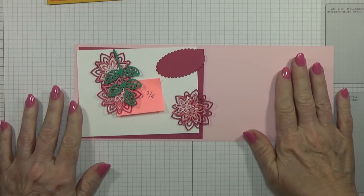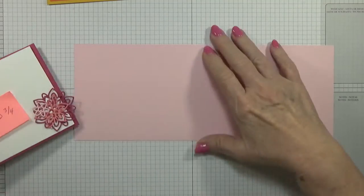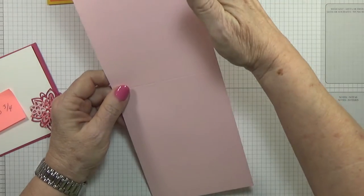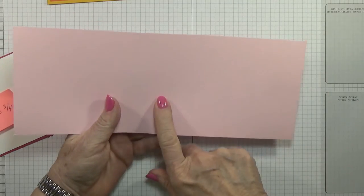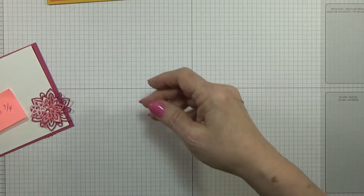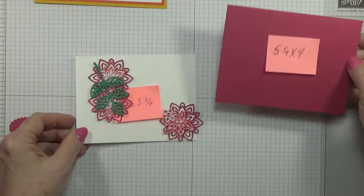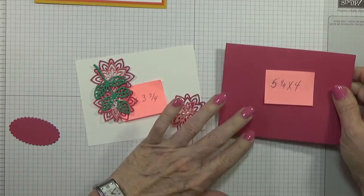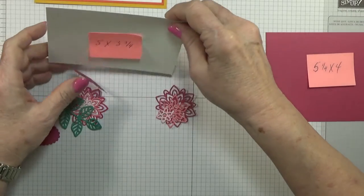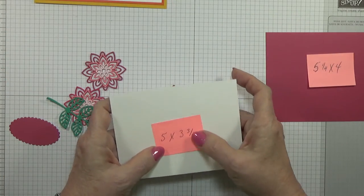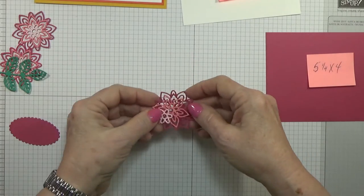I am doing this in the pinks and right now the base card is going to be the Pink Pirouette. I cut it at four and a quarter by eleven and scored it at five and a half. For the mat card I used the Rose Red and it's cut at five and a quarter by four, and for my Whisper White it's cut at five by three and three quarters.